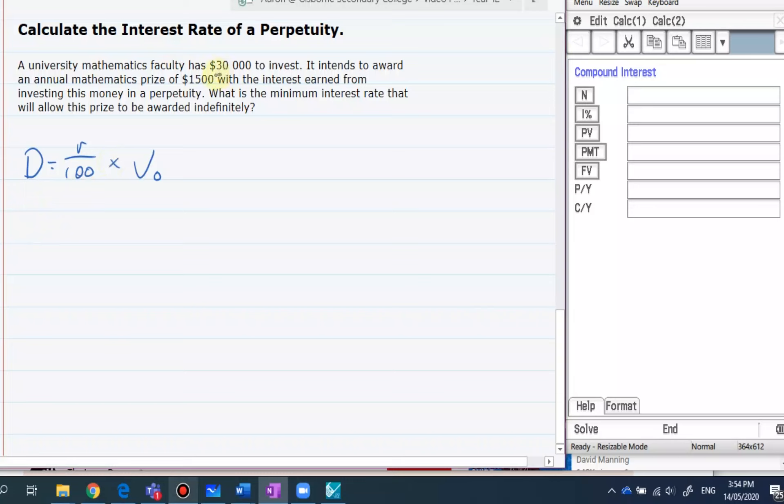So the faculty has $30,000 to invest, wants a prize of $1,500 and so it needs to know what rate it needs to bargain with to get that from the financial institution.